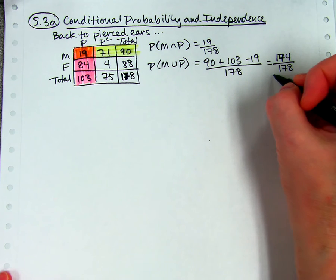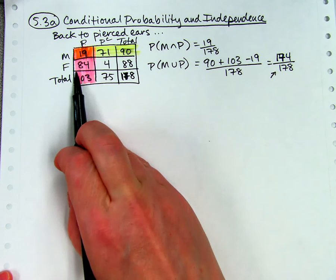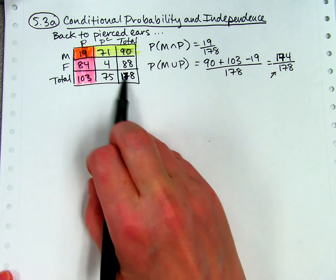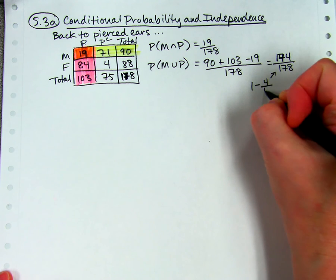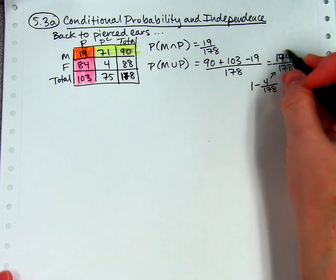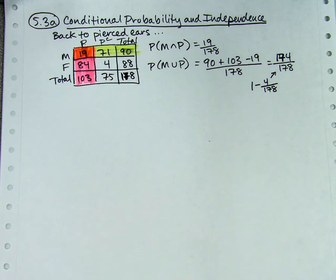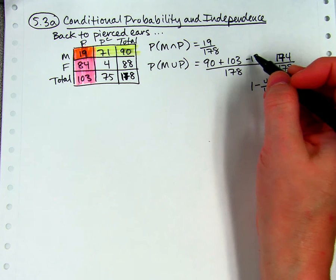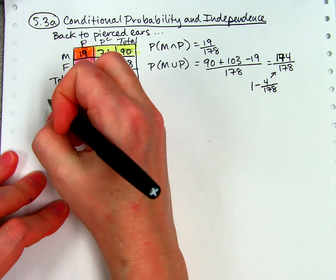That's just reminders of what we did in the last lesson. We could find a couple other ways. We could also find it by adding these three numbers, 84 and 19 and 71, or by doing 178 minus 4, or 1 minus 4 over 178. It's basically counting everybody except the Neethers. So this is the addition rule. Add them and subtract the overlap that we saw in Lesson 5-2-8. Now let's move on to conditional probability.